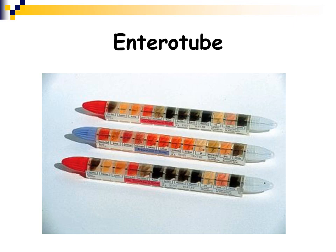Here's the entero tube — it looks like a big pen. You take off both caps, touch the metal tip to your organism, and pull this metal rod through all those different media. Then you put it back in halfway, break off the end of the metal tube, put your cap back on, put it in the incubator, and after an overnight incubation you come back and read each one of the different media test reactions. It gives you a number; you look up that number in a book, and it tells you what organism those test reactions correspond to.